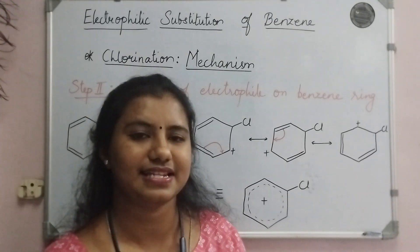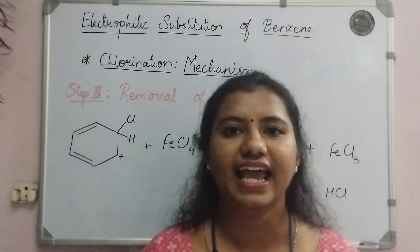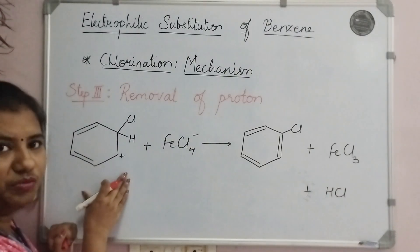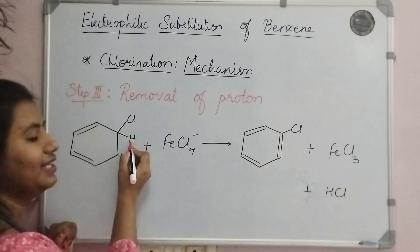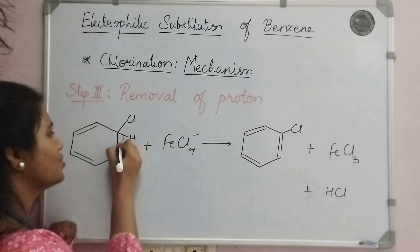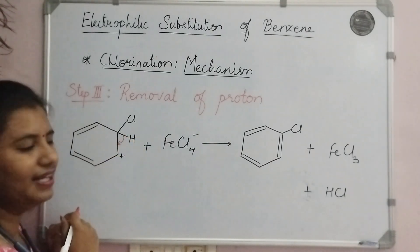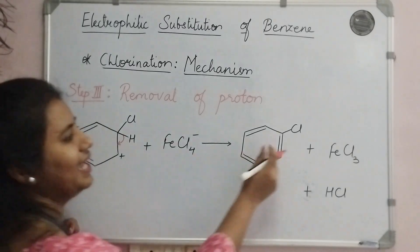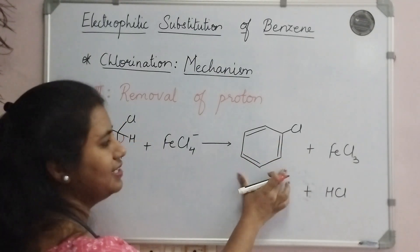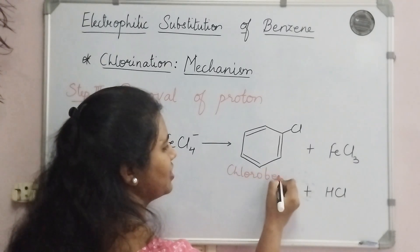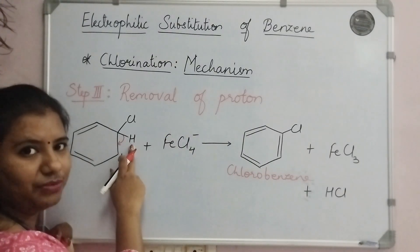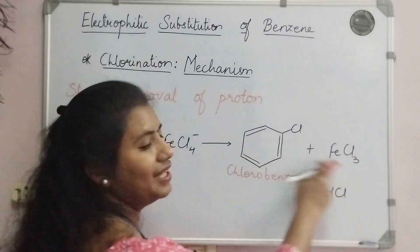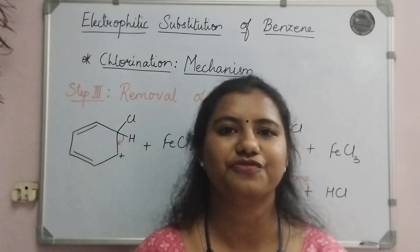Now let's take the last and final step of this mechanism. In the third step, we are going to get the final product, chlorobenzene, by removal of a proton. We know that at this position, other than chlorine, there is one hydrogen also. This hydrogen is going to leave the electrons here and go away as H⁺. As these electrons are retained back between the two carbon atoms, we get the double bond present again. So the final compound, chlorobenzene, is formed in this reaction. The H⁺ which leaves takes up a chlorine and forms HCl as a byproduct, and the catalyst FeCl₃ is regenerated as it is. So this is how chlorination of benzene takes place.